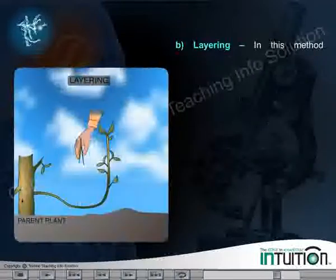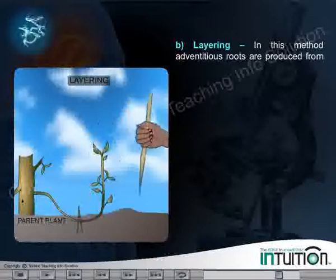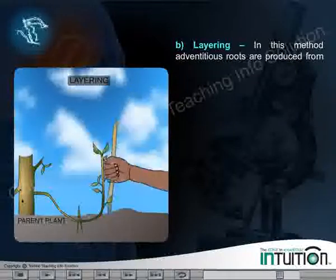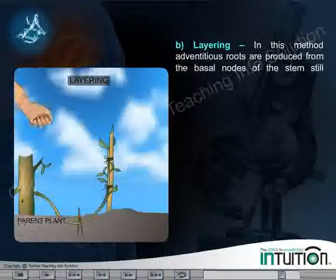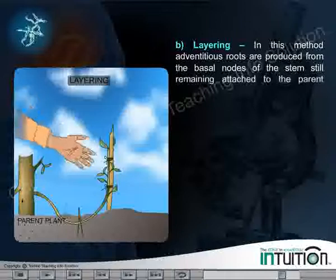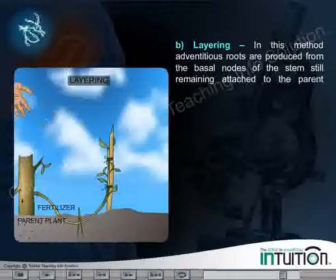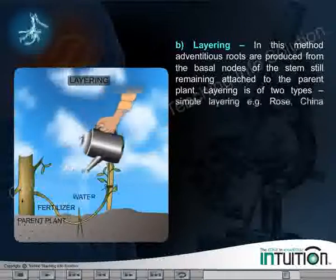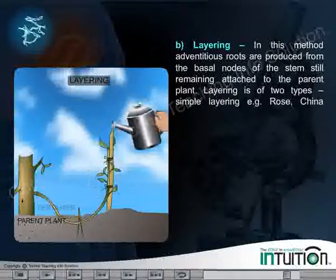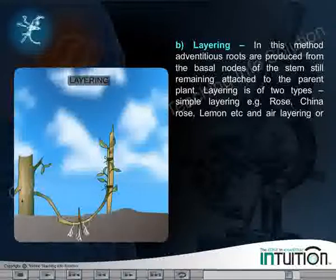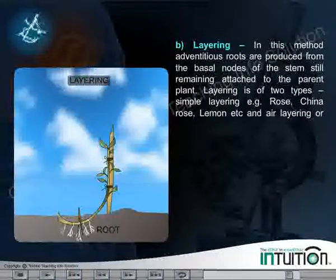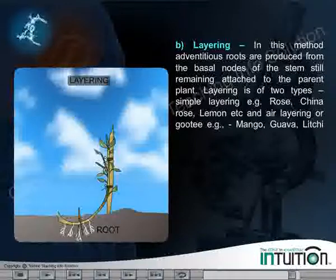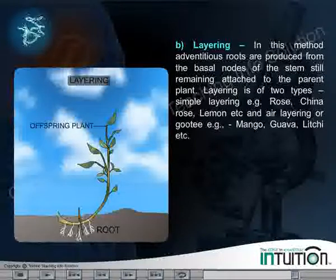Layering: In this method, adventitious roots are produced from the basal nodes of the stem still remaining attached to the parent plant. Layering is of two types: simple layering, examples include rose, china rose, lemon, etc.; and air layering or gooty, examples include mango, guava, lychee, etc.